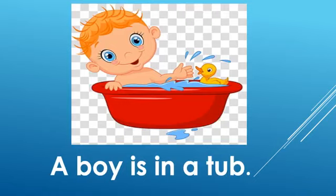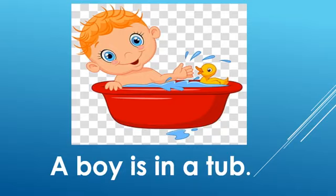What do you see in this picture? There's a red tub, and there's a boy sitting in the tub. There's also a toy in the tub, so we could frame two sentences. The first one could be: A boy is in a tub. What would be the second sentence? A toy is in a tub.